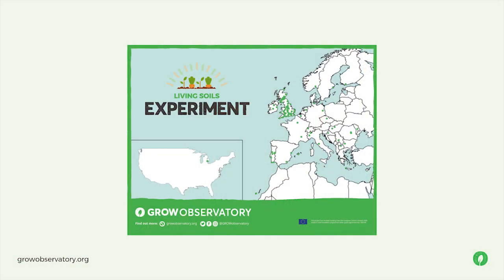Unfortunately, polycultures — certainly three or more crops growing together — are massively understudied by science, both at farm scale and in gardens. There's a lot of anecdotal evidence from individuals trying them out, but we've learned through our online courses that people are really interested in growing polycultures but not very confident about how well they work. So we set up an experiment to test this.